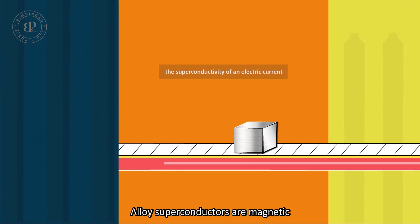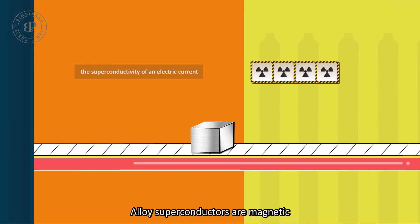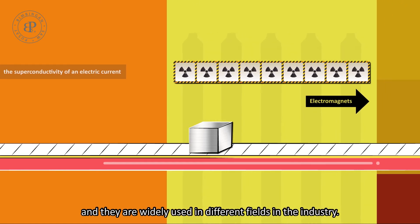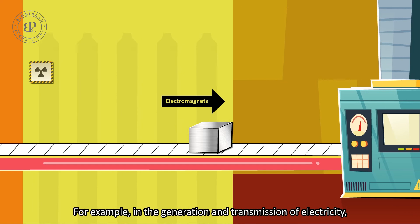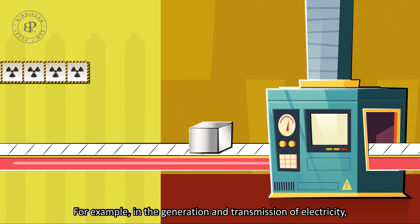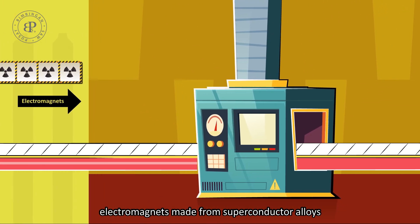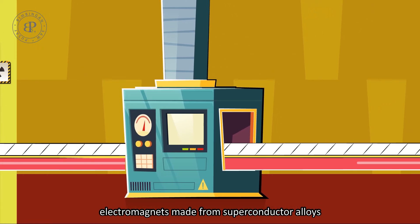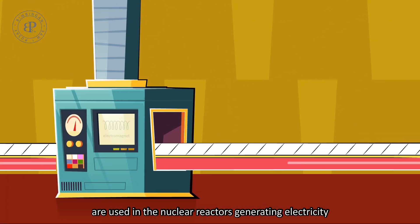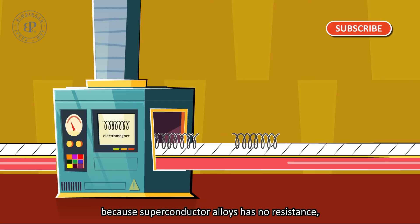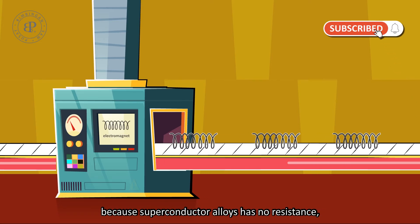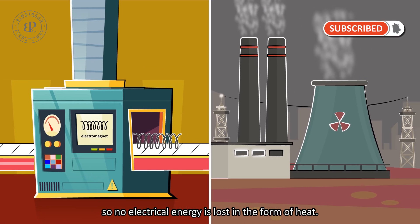Alloy superconductors are magnetic and they are widely used in different fields in the industry. For example, in the generation and transmission of electricity. Electromagnets made from superconductor alloys are used in nuclear reactors generating electricity because superconductor alloys have no resistance, so no electrical energy is lost in the form of heat.